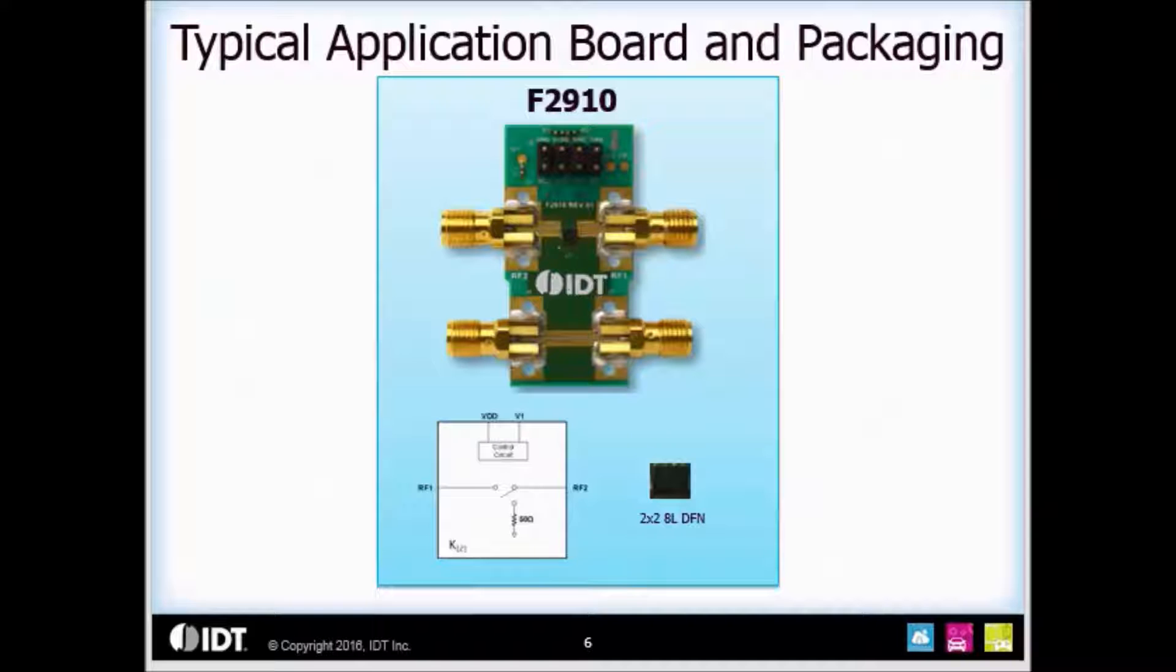IDT offers a simple to use evaluation board to help our customers perform lab measurements. The board consists of a pin header across the top with power, ground, and logic control. There is an RF through calibration port to make it easy to de-embed the trace loss. And finally there are RF connectors on each of the RF ports to measure the device's performance.